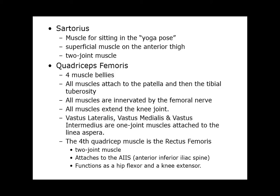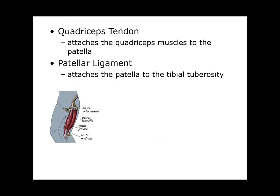Let's look at this distal connection a little bit. All these muscle bellies merge into the quadricep tendon, which goes from muscle to bone and attaches to the patella. Then between the patella and the tibial tuberosity, we call that portion of the insertion the patellar ligament.